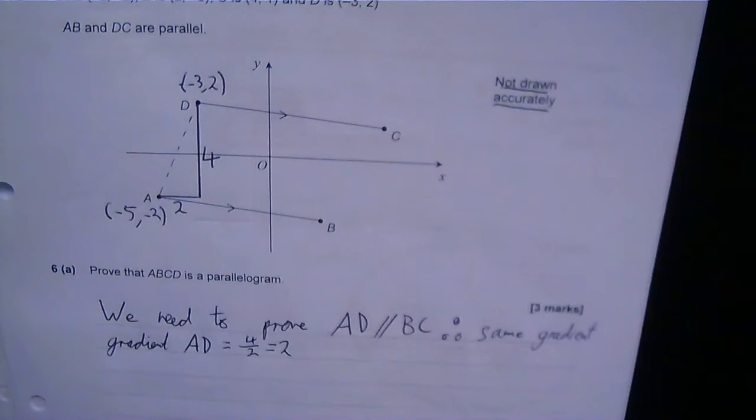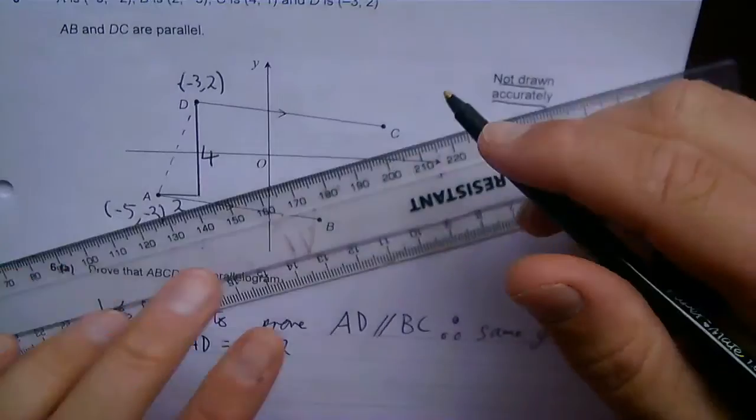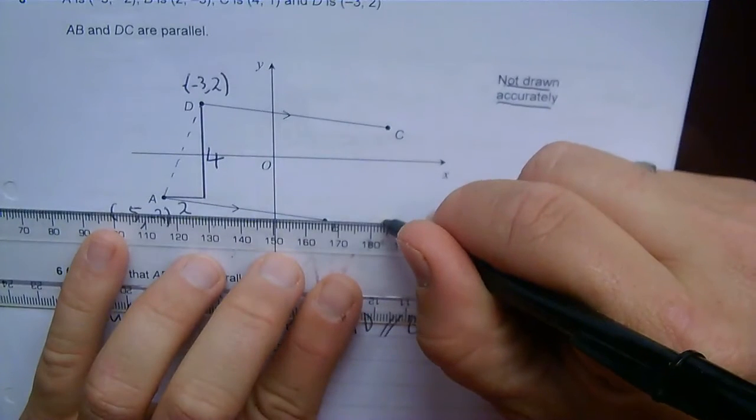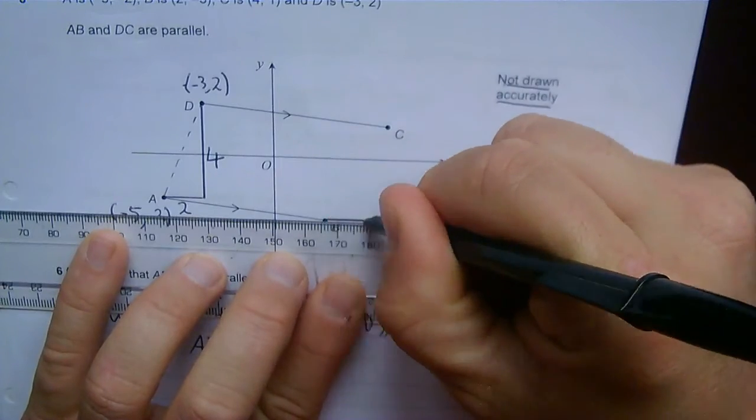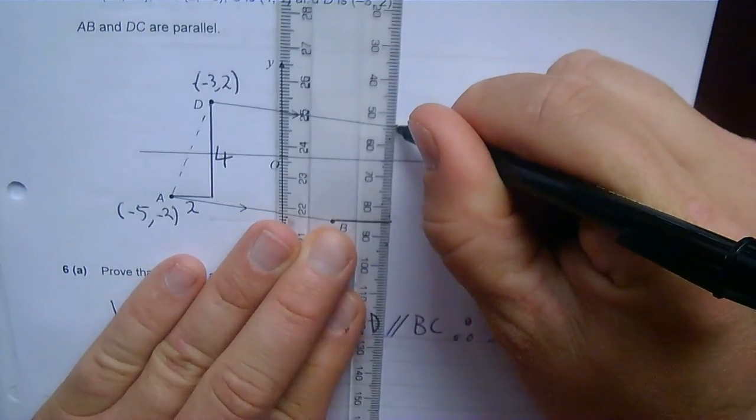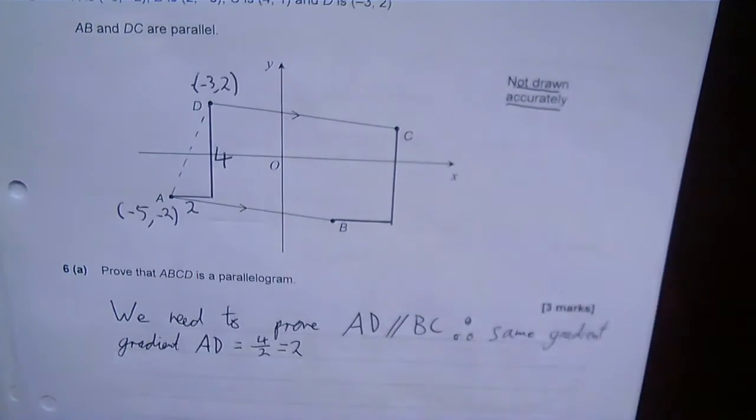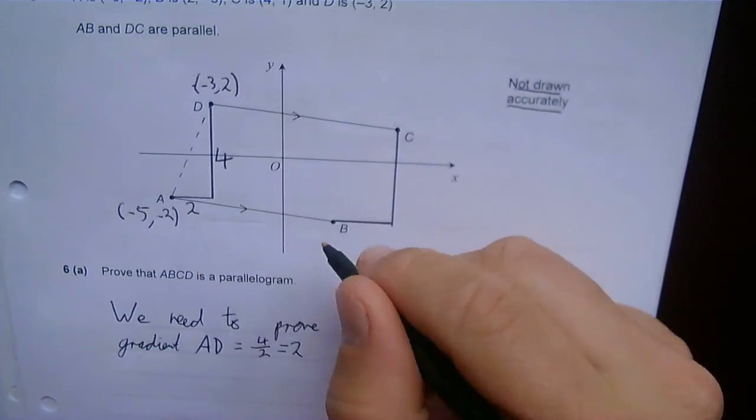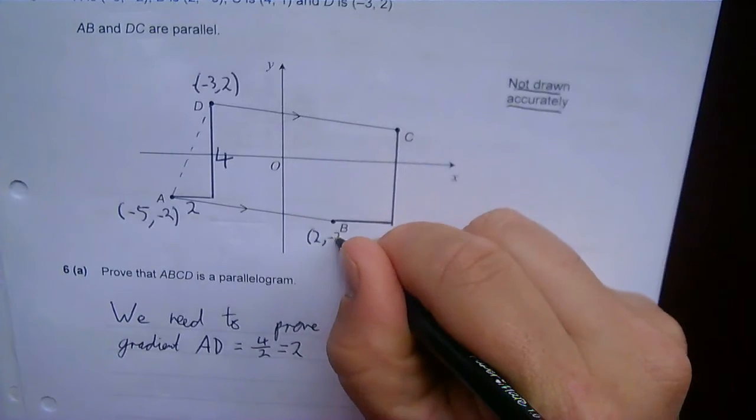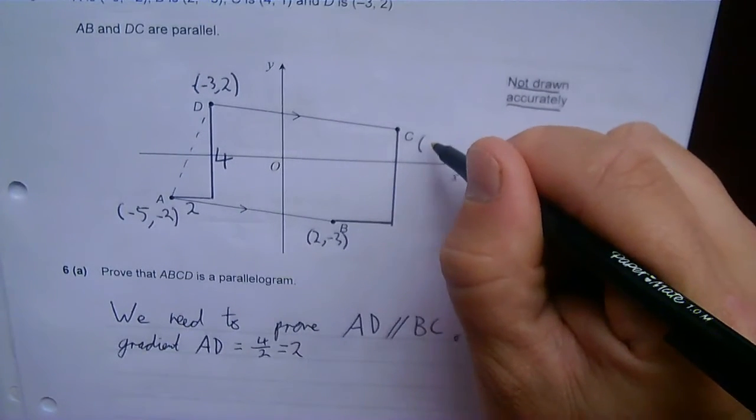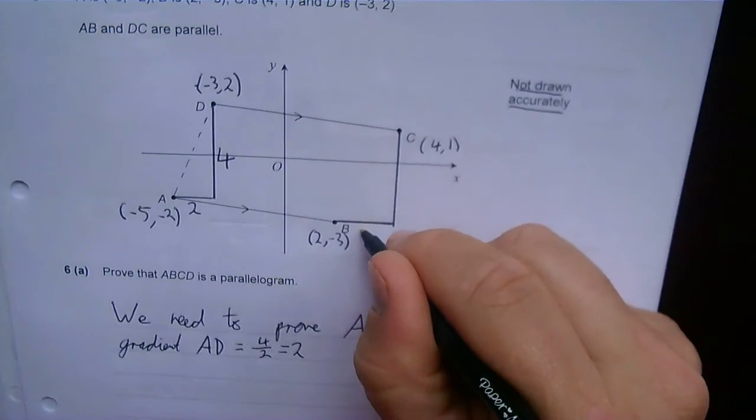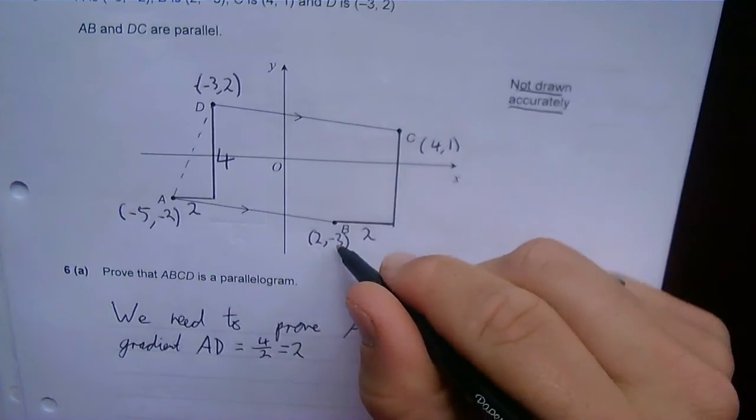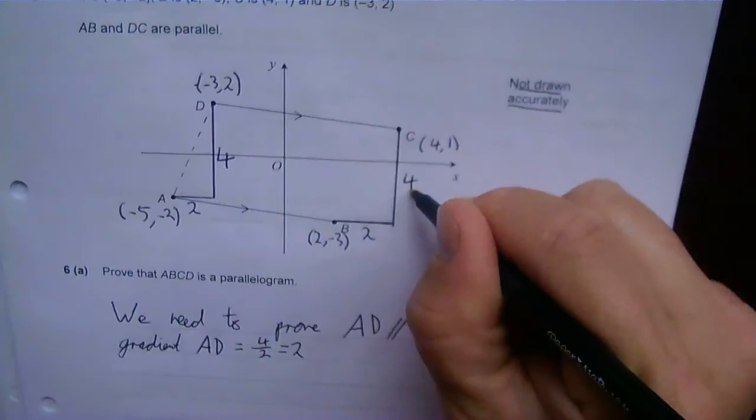Now we need to show that BC has the same gradient. So let's do exactly the same thing with BC. Note, it's not drawn accurately. It won't look right. So let's check this out. Let's put in the value. So B is (2, -3), and C is (4, 1). So from 2 to 4 is 2, and from -3 to 1 is 4.